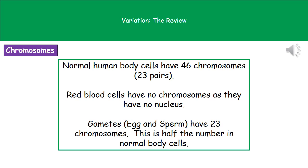Be careful on these questions in your exam. Most of the time they won't ask about humans — they'll give you information about some animal like a mouse or a monkey, and tell you how many chromosomes are in either the gamete or the normal body cell. Then they'll ask how many are in the other. For example, if a mouse's normal body cell has 8 chromosomes, the gamete has 4. If a monkey's gamete has 10 chromosomes, the normal body cell has 20. Read the question carefully and use the information given.